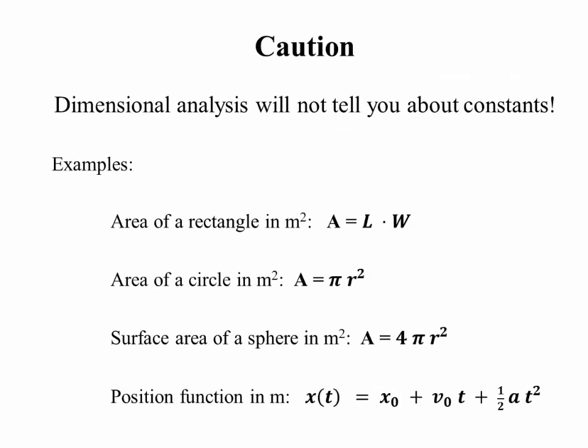However, it will not tell you about constants. For example, the area of a rectangle is length times width. But the area of a circle is pi r squared. That's got units of square meters, but there's a factor of pi. The surface area of a sphere is 4 pi r squared. Also meters squared, but you've got to know the 4 pi.